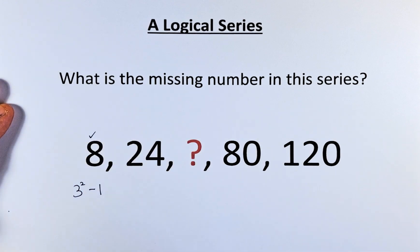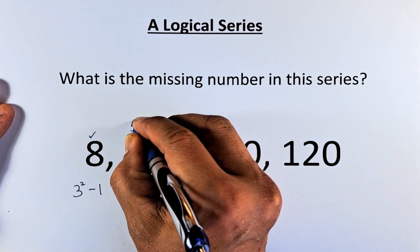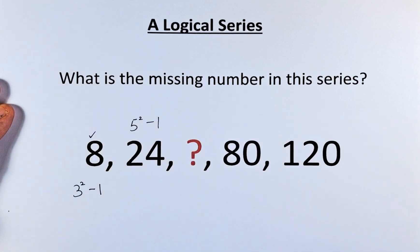Then 24 is going to be 5 squared minus 1. So 5 squared is 25. 25 minus 1, that will give us 24. We'll skip the question mark for now.